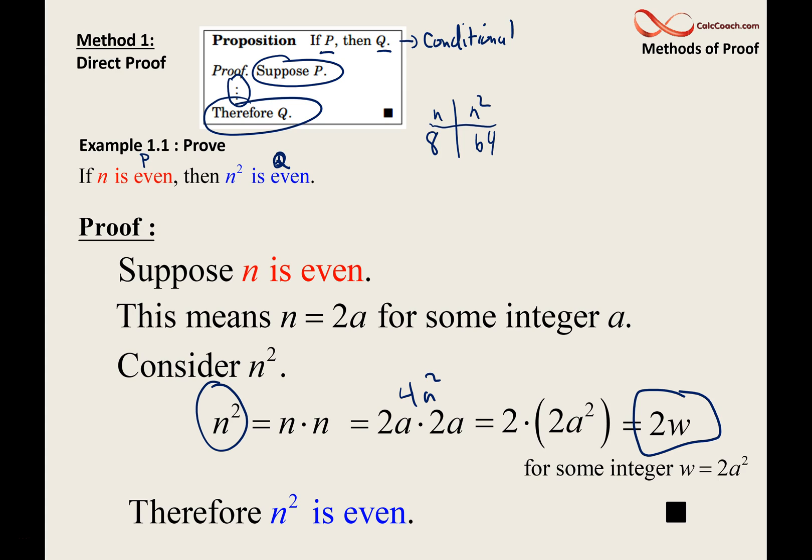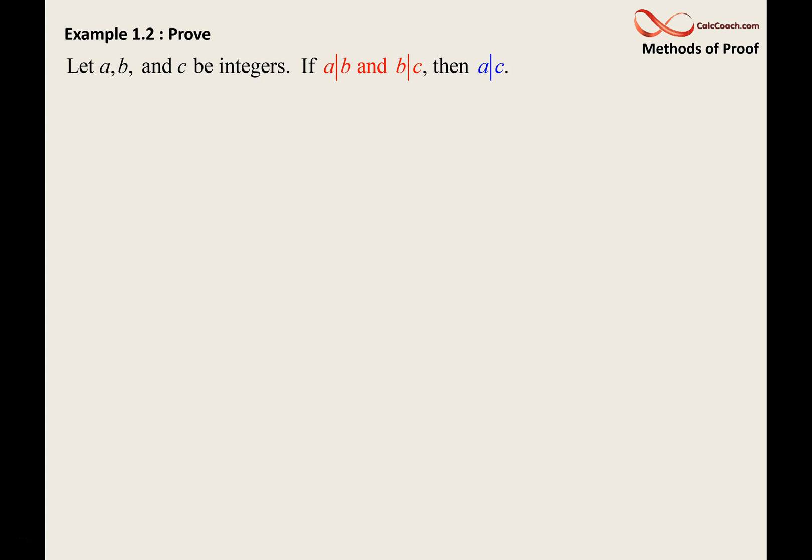Let's do one more example. And then, we'll switch methods. So, I have three integers a, b, and c.